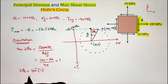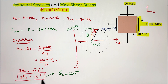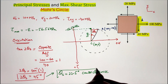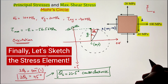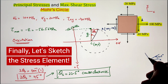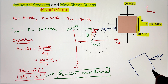One thing to keep in mind: the value of theta S is 22.5 degrees, however it is in the counter-clockwise direction. The process for drawing the stress element is identical — we start with the horizontal x-axis representing the reference line CA and go counter-clockwise at 22.5 degrees, then draw our stress element perpendicular to this line.